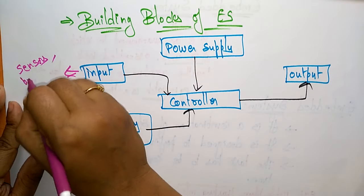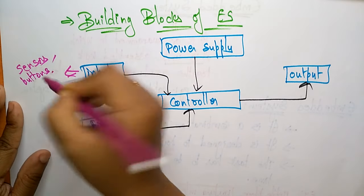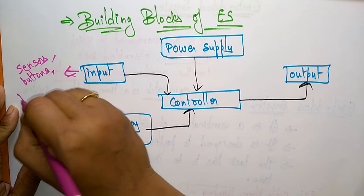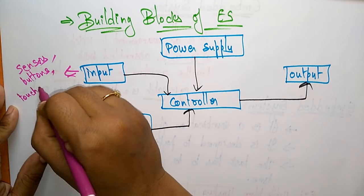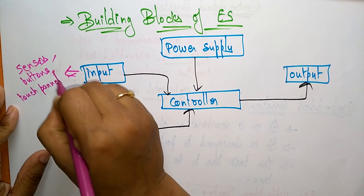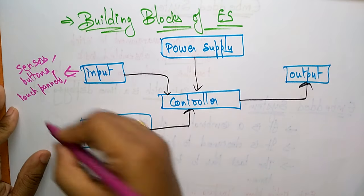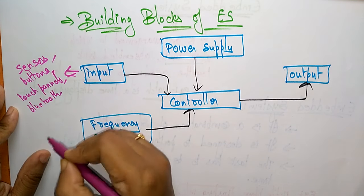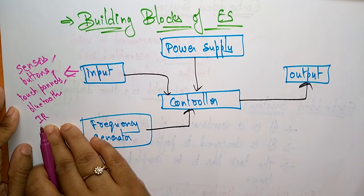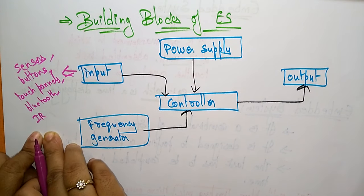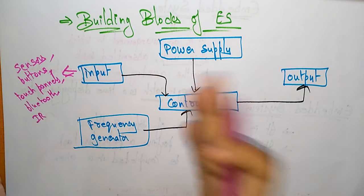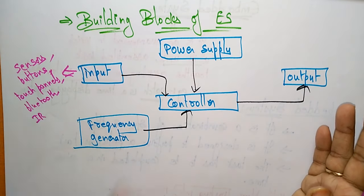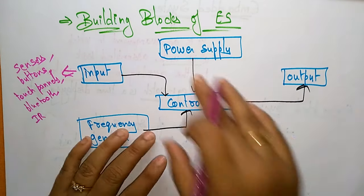You can use buttons as input, or touch panels — like in mobile phones. You can also use Bluetooth as an input, and infrared (IR) rays — like for TV remotes. These are the different inputs that connect to the controller.